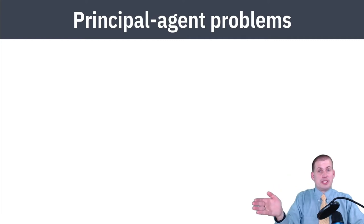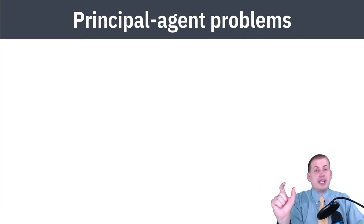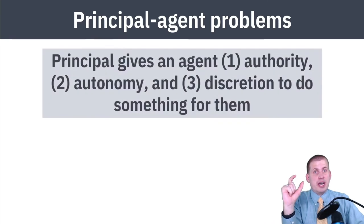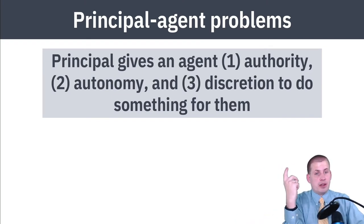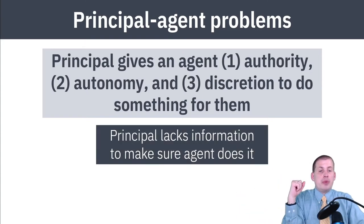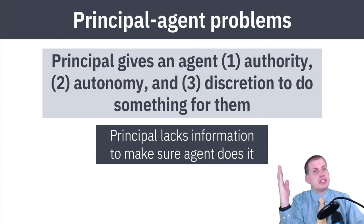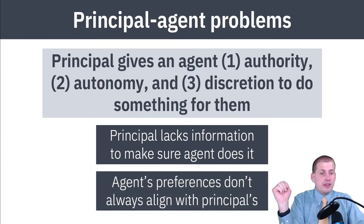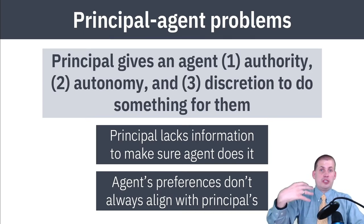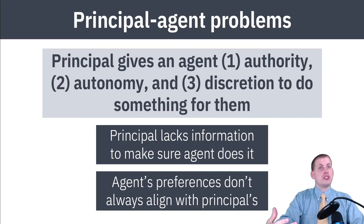The issue with the principal-agent problem is it's really hard to make sure the agent does what the principal wants. A principal will give an agent authority, autonomy, and discretion, but then lacks the ability to verify that the agent does it — this is the hidden knowledge, or adverse selection, side. Often the agent's preferences don't align with the principal's preferences: you might tell an employee to do something and they'll say sure, but they have other ideas.